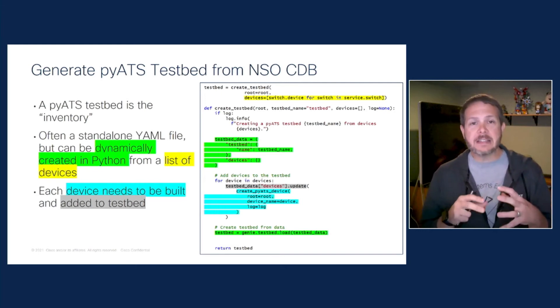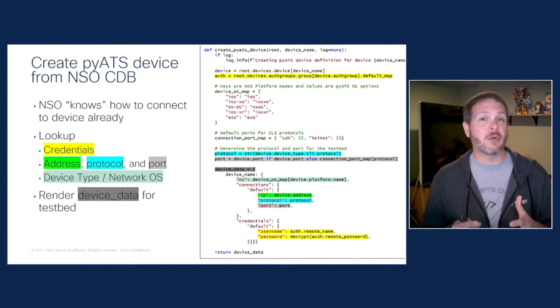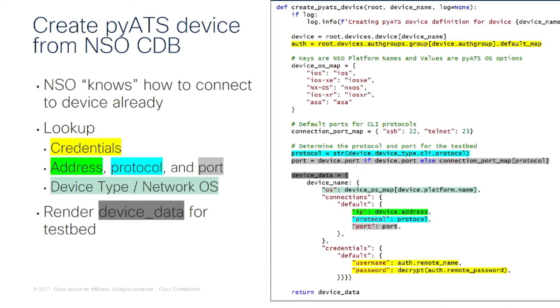Looking at that function, we can see how we pull all of the details from within NSO, because NSO already knows how to connect to and talk to our devices. Some pieces of information are easy — for example, authentication can be learned just by looking at the auth group attached to a device, and the address is just what device address NSO uses to talk to it. The operating system is a little bit tougher: PyATS has a list of keywords to identify what type of device it's talking to, while NSO has the platform it learns when it uses the NED. So I created a simple map that takes it from one to the other. All of those details create the device data that is returned and put into the testbed used by our action.